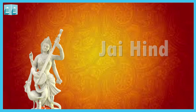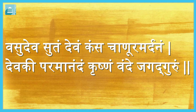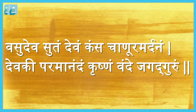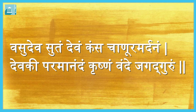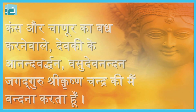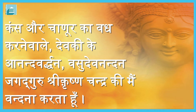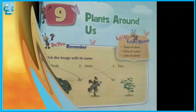Jai Hind. Vasudevam Sutam Devam Kansachanuram Ardhanam, Devaki Paramanandam Krishnam Vande Jagat Guru. This shloka means: one who slew Kansa and Chanur, who is the joy of Devaki, the son of Vasudeva — I bow to Lord Krishna, the Guru of the universe.